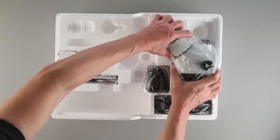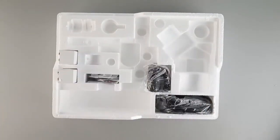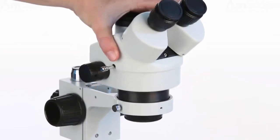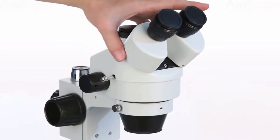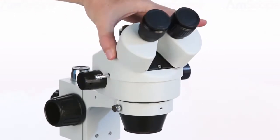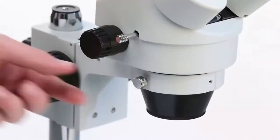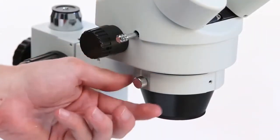Now let's install the head. Simply slip the head into the collar on the focusing rack. The head can be rotated to suit your working conditions. Once in position, secure it by turning the collar's locking screw.